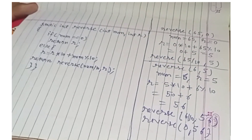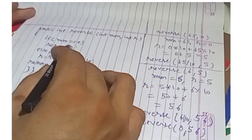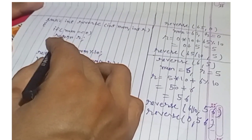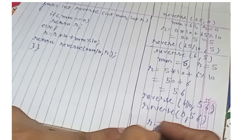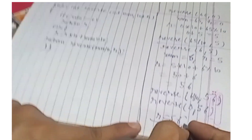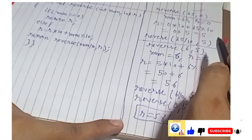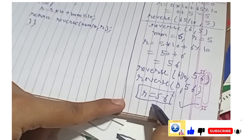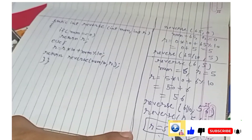When reverse(0, 56) is called, num is 0 and the condition num == 0 is true, so the current value of R, which is 56, is returned. The recursion stops and the final result is returned. So, the reverse of 65 is 56. We have successfully demonstrated reversing a number using the recursive technique.